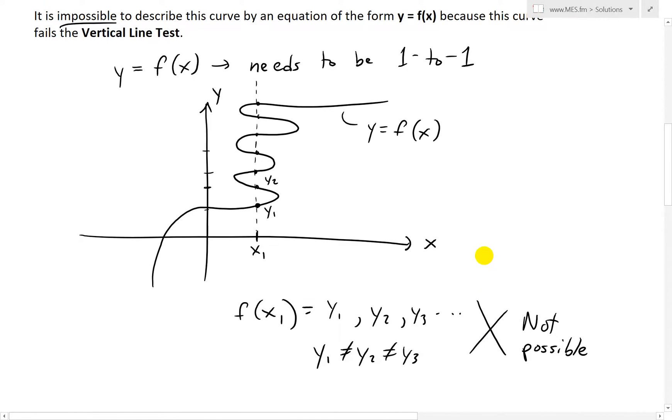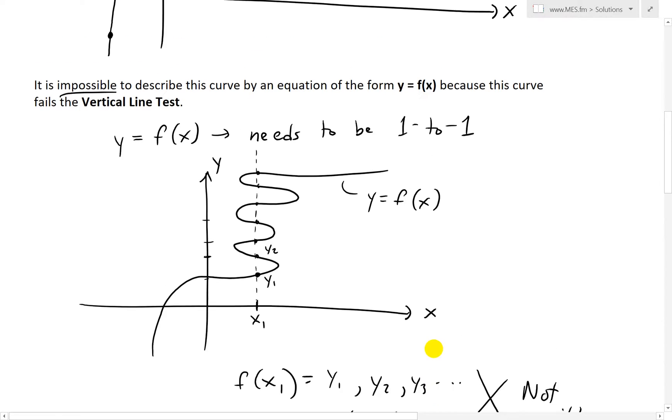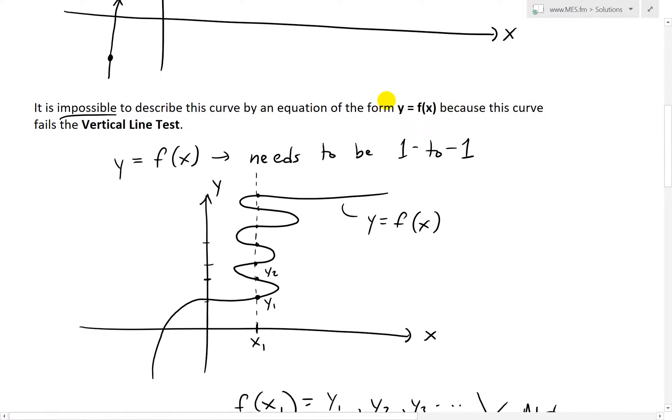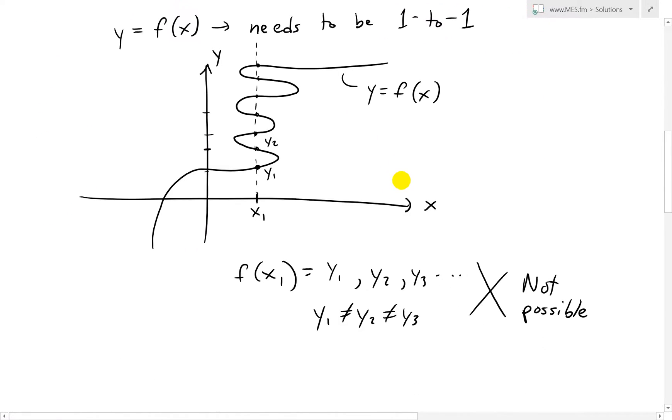So this fails the vertical line test. All you do is draw a vertical line. It needs to be only one to one. So because it fails this, if you just draw a line across, you can see that we'll have multiple y values for every one x value.